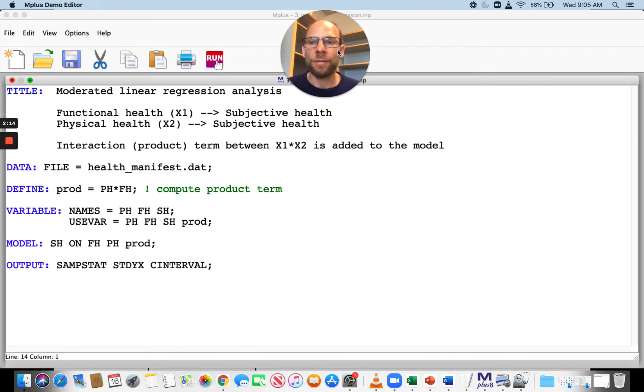In this input file, I first of all use the define command here to create a new variable that I call prod for product term. And so prod is the product of two variables that I'm using as predictors here.